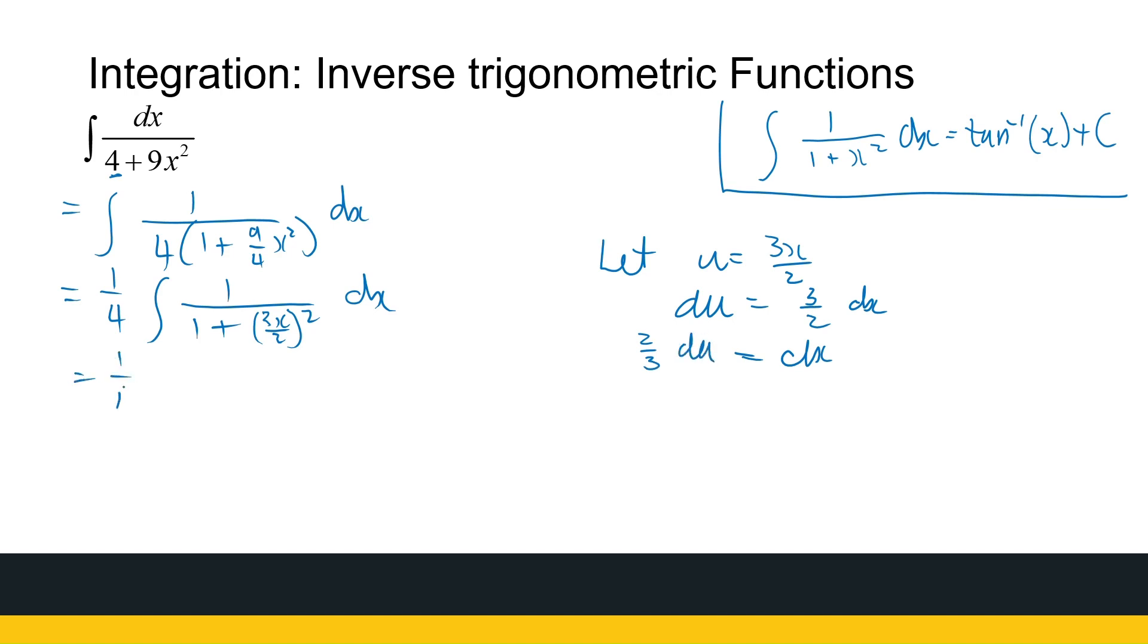So I get a quarter times 2 over 3 times the integral of 1 over 1 plus u squared du. So this gives me 1 over 6 times the antiderivative of 1 over 1 plus u squared, we know will then be arc tan or inverse tan of u plus c, so that's 1 over 6 inverse tan of u is 3x over 2 plus c.